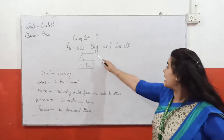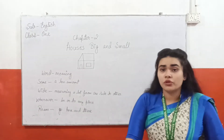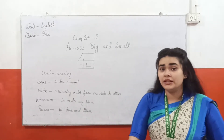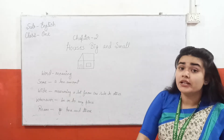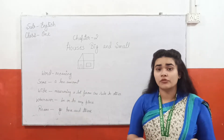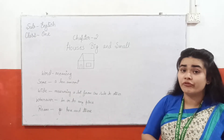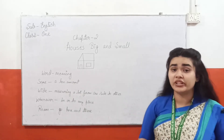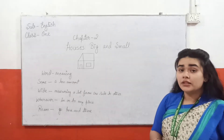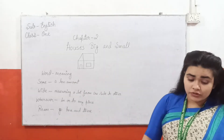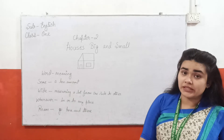The name of the chapter is Houses Big and Small. So if you have seen the houses, houses are of different kinds. Some houses are small, some houses are big. Some houses have different shape and size, and there are so many houses in so many places.